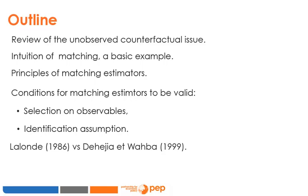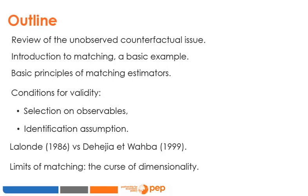As an introduction to the matching literature, I will present the LaLonde versus Dehejia and Wahba debate — an academic dispute that occurred about 30 years ago, which can teach us a lot about the choice of non-experimental estimators and the validity of their results. Towards the end of the module, I will present the limits of the matching approach, including the so-called curse of dimensionality. In practice, few researchers use matching as their core estimation method; most of the time, matching estimators are used as robustness checks to support propensity score matching, or PSM, which is the subject of the next module.